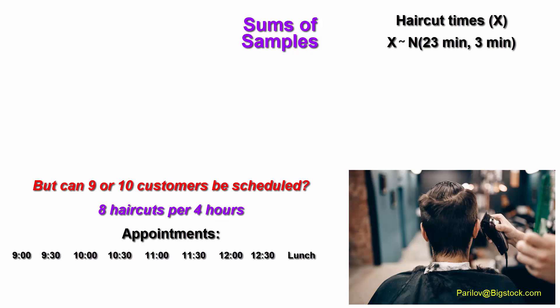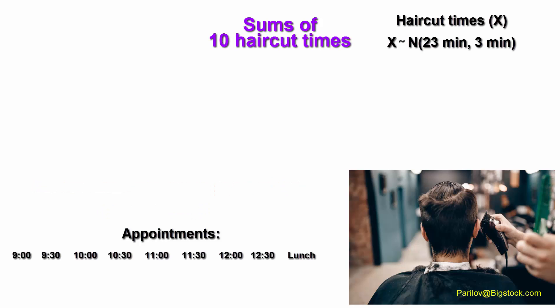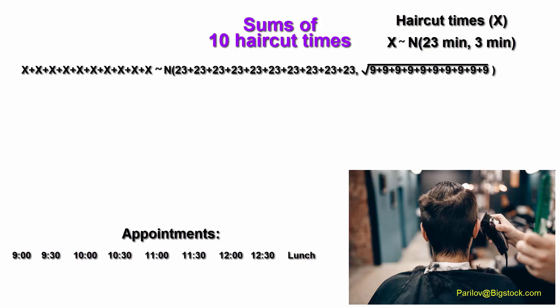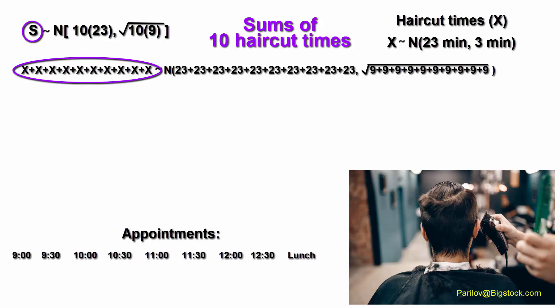But can 9 or even 10 customers be scheduled without running behind by more than a few minutes? Let's consider random samples of 10 haircuts and find the distribution of the sums of times. This would be a joint distribution. We will declare random variable S, the sum, as being the sum of 10 X's — 10 randomly selected times.